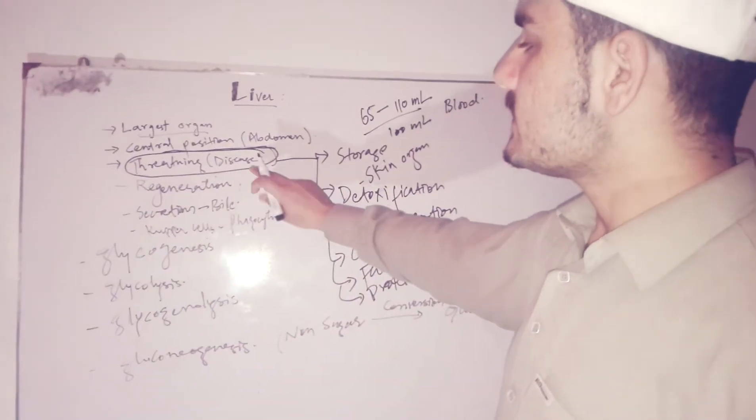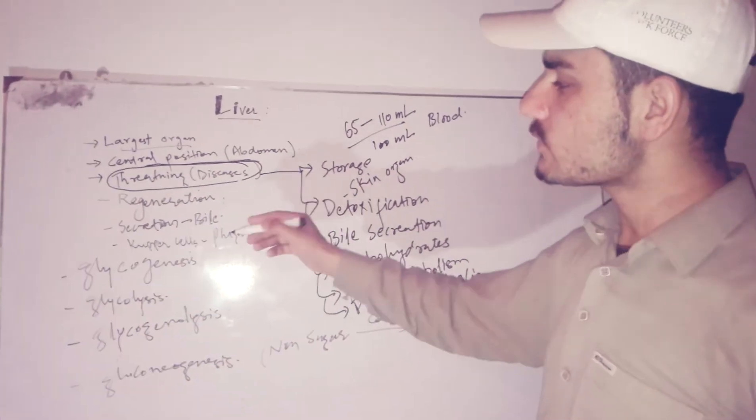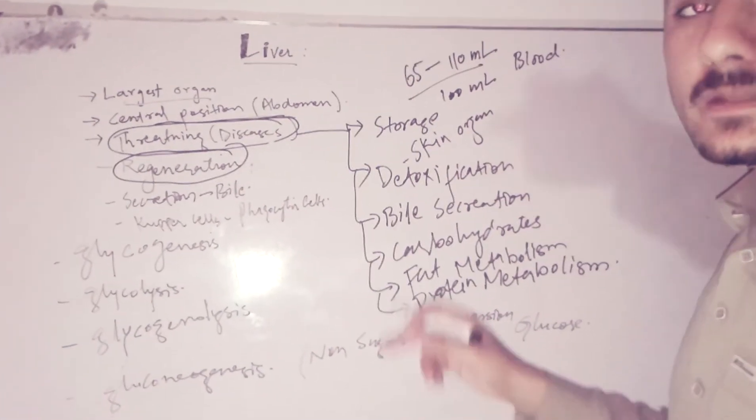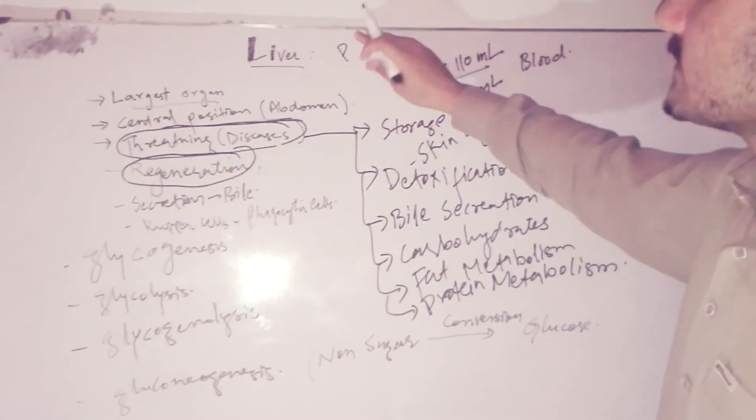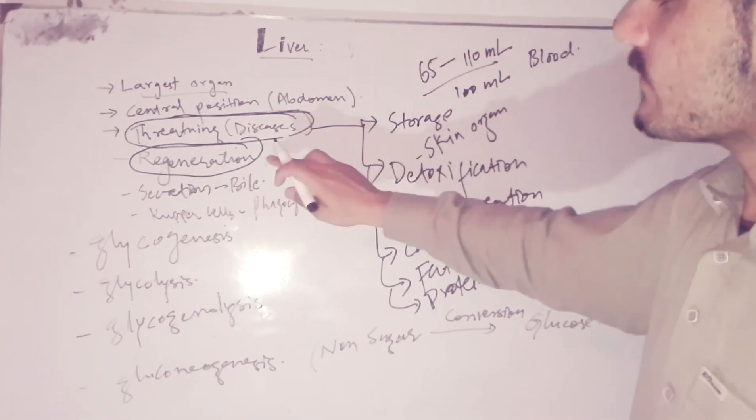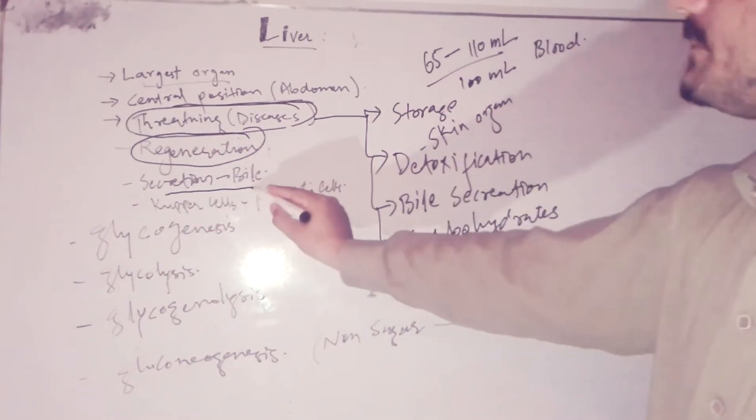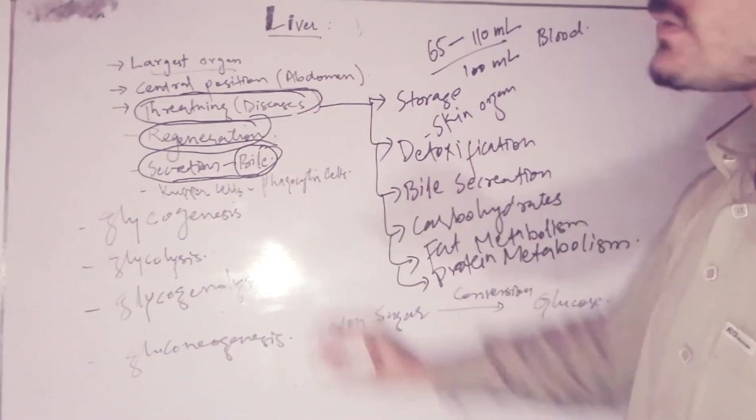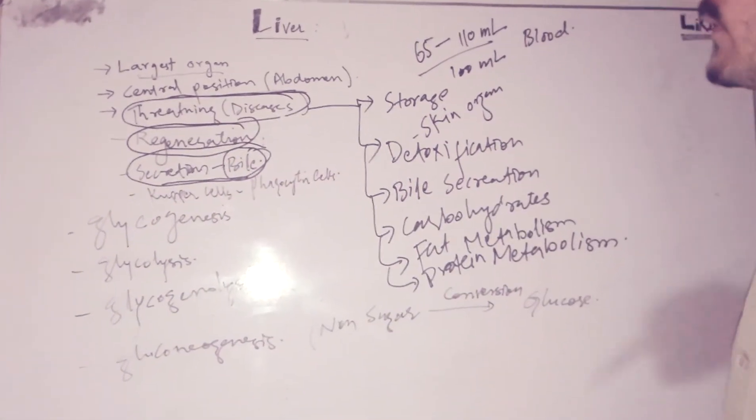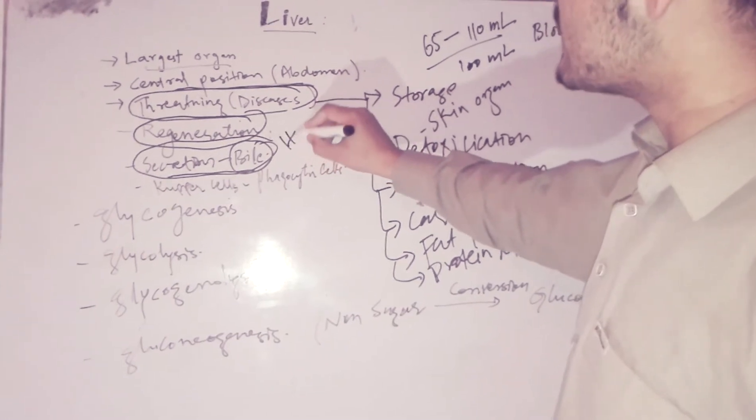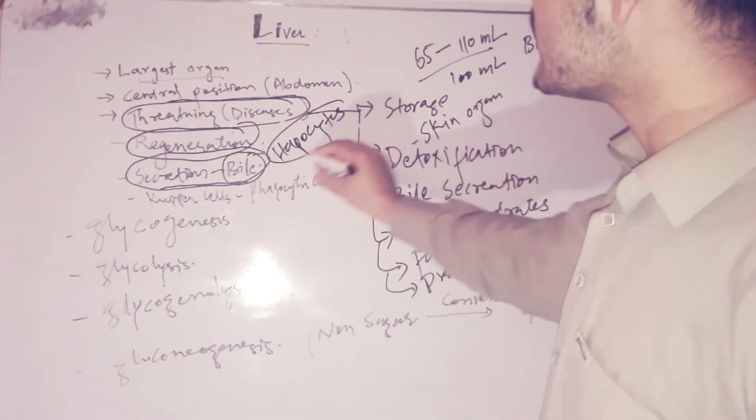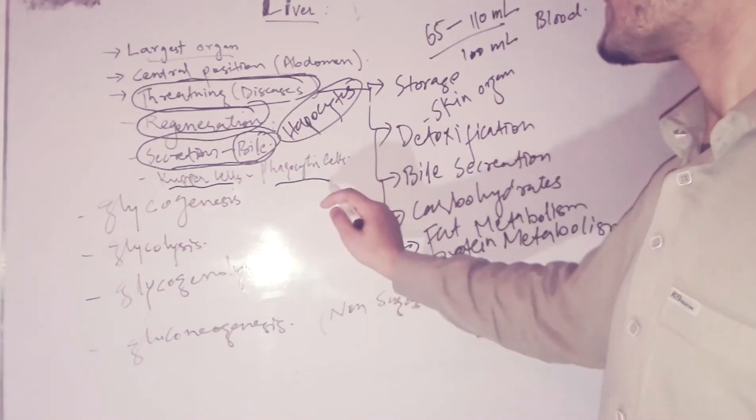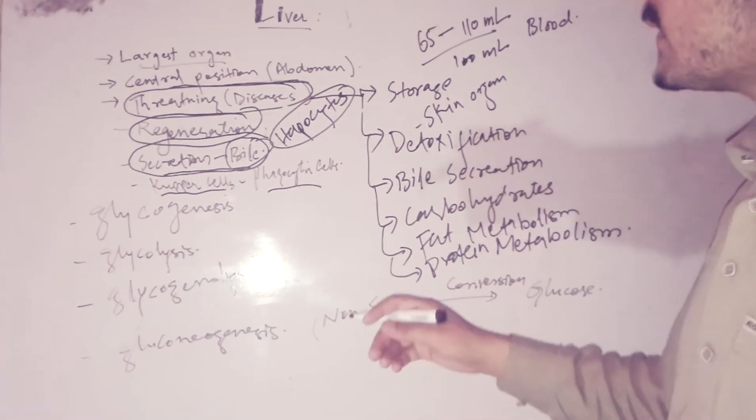We should also know the regeneration power. The only organisms in the kingdom Animalia that have the power of regeneration include the liver. Liver secretes bile, which is the main product we obtain from the liver. Most cells of the liver are called hepatocytes. The hepatocytes cells of the liver secrete bile, and there are also Kupffer cells which are phagocytic in action, helping in detoxification inside the liver.